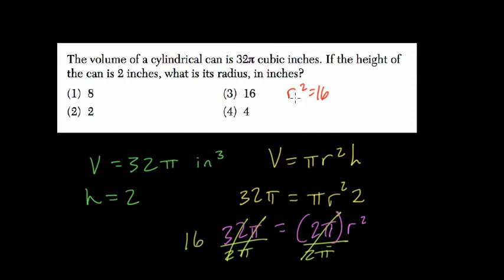But if r² is 16, take the square root of both sides and r equals 4, the square root of 16. So we have choice 4.